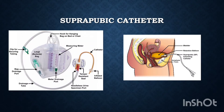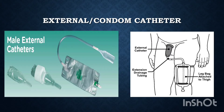The suprapubic catheter is a type of indwelling catheter and is inserted into the bladder through a surgical incision made in the abdominal wall right above the pubic bone. It is commonly used for patients who have a blocked urethra.